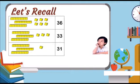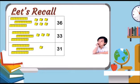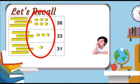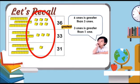Let us compare the tens. The tens are equal. Let us compare the ones. The ones are different. Six ones is greater than three ones. Three ones is greater than one one. So, 36 is the greatest. 31 is the smallest.